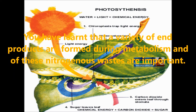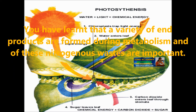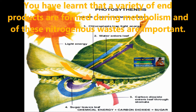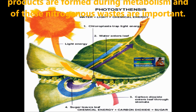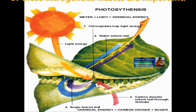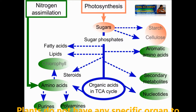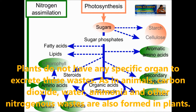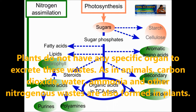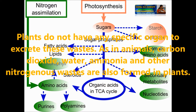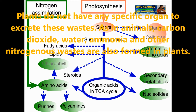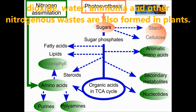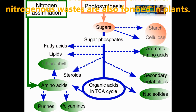Children, you have learned that a variety of end products are formed during metabolism, and of these, nitrogenous wastes are very important. Plants do not have any specific organ to excrete these wastes. As in animals, carbon dioxide, water, ammonia and other nitrogenous wastes are also formed in plants.